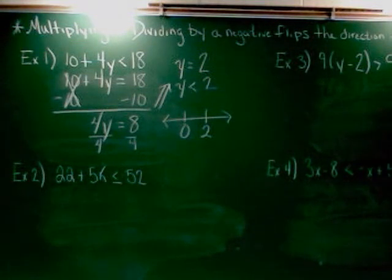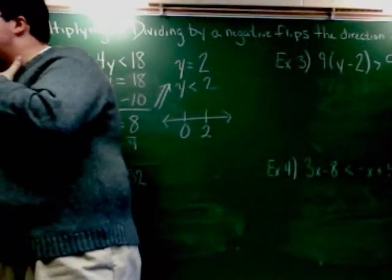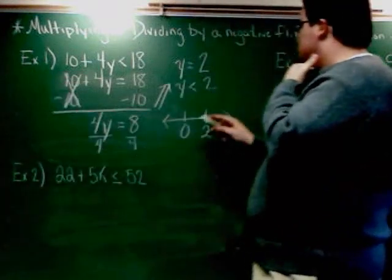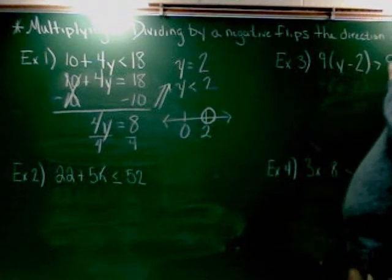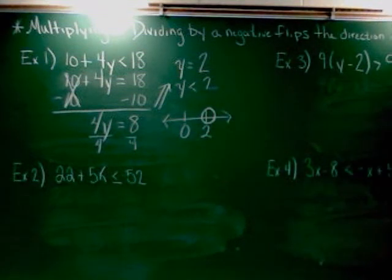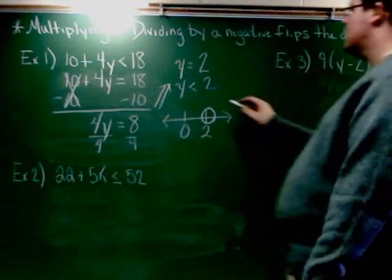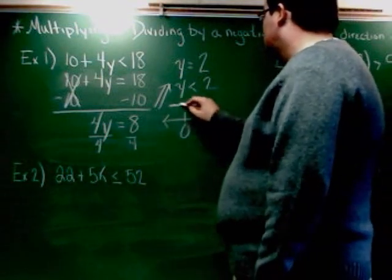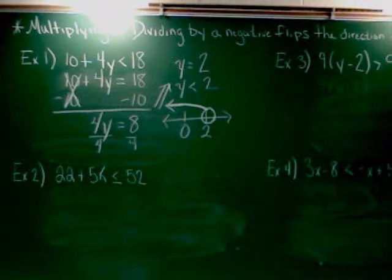Now I've got to do the dot thing. Remember, the dot thing is based on the symbol. This is a less than, and according to rule, less than uses an open dot. So I'm going to put an open dot on that 2. And then less than shades everything off to the left. All the numbers that are less than 2 are to the left. So we shade off to the left. And that is the total solution to example 1.